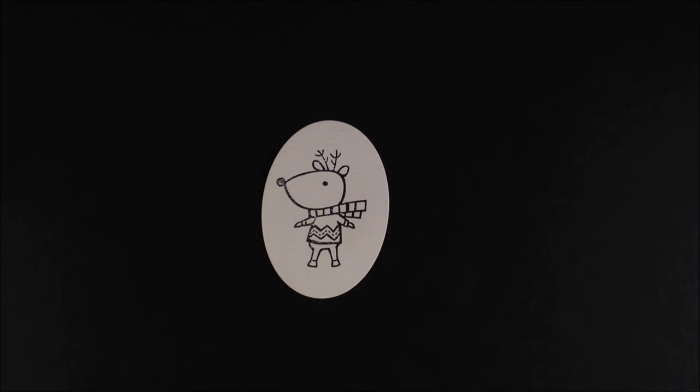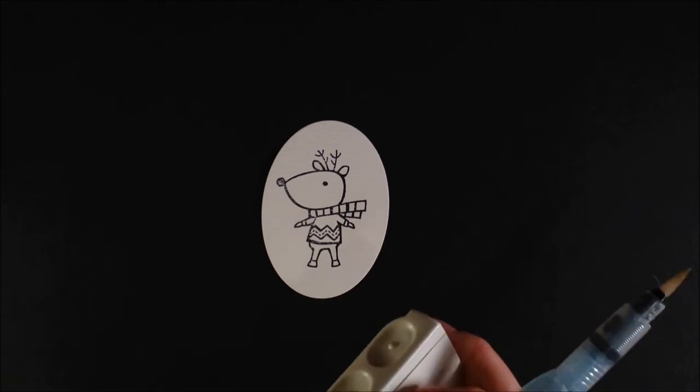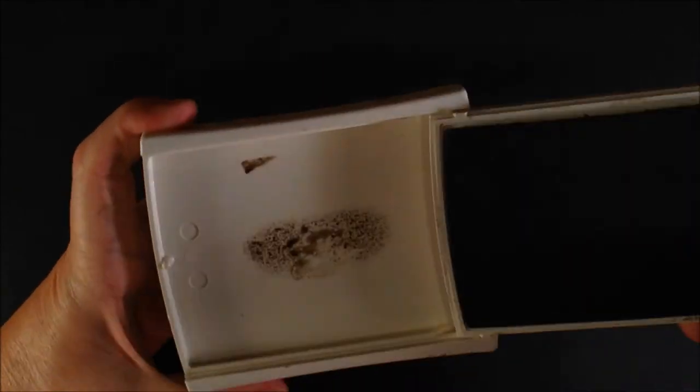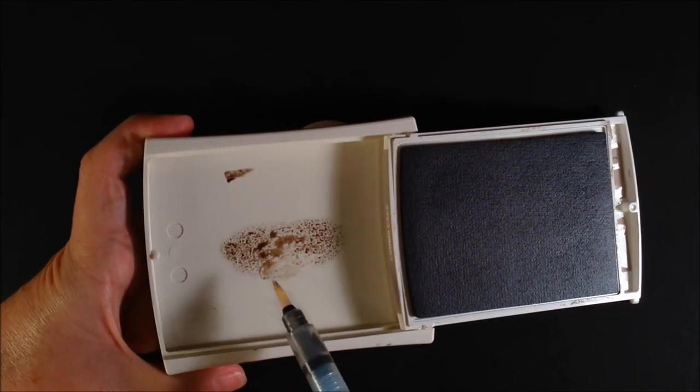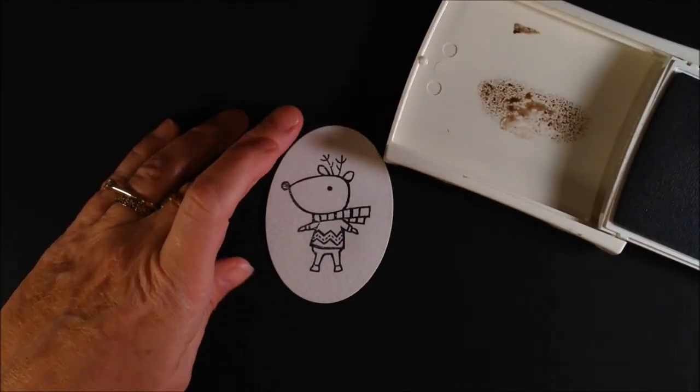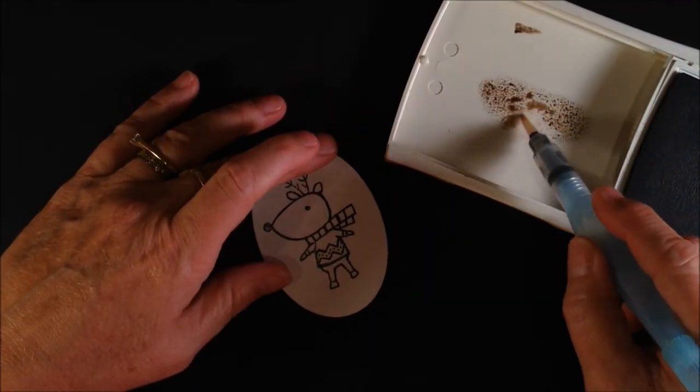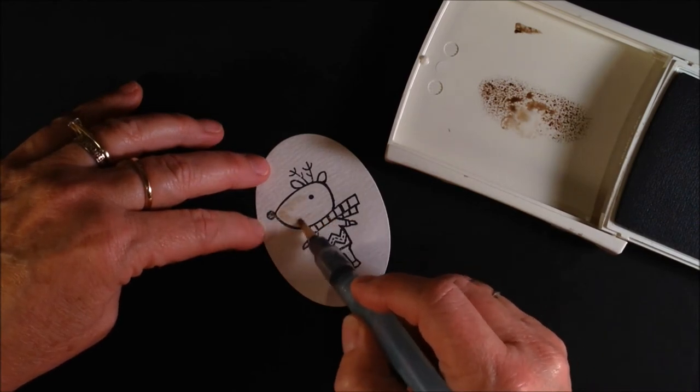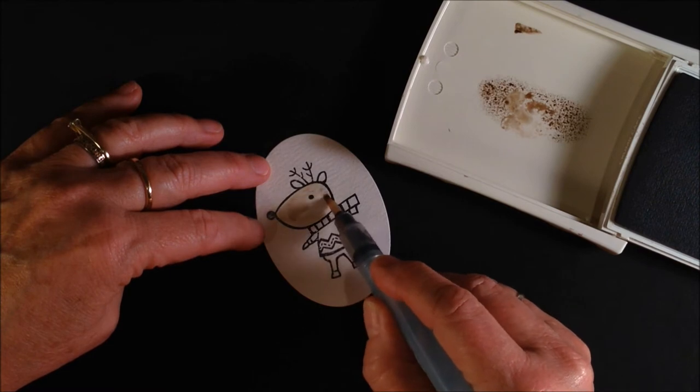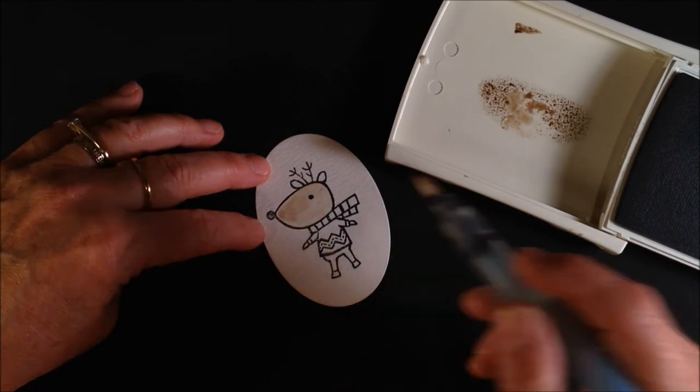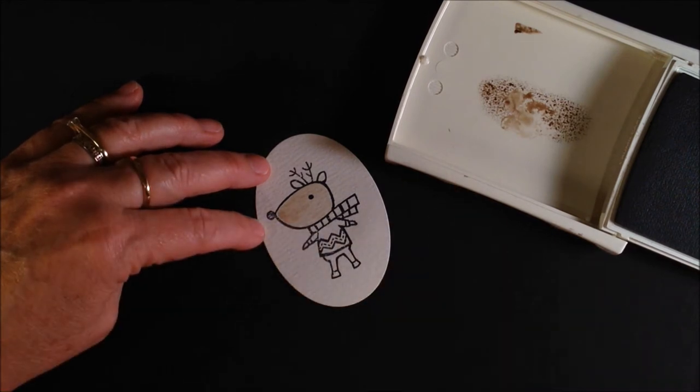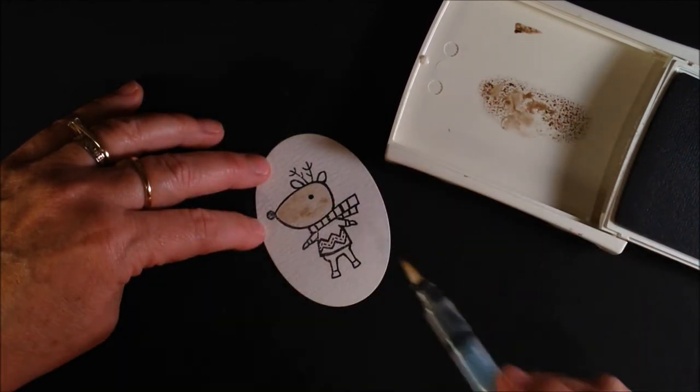You always start with the lightest color first. Now I'm going to squeeze my ink pad. Stampin' Up has designed their ink pad so that you can squeeze them and get this little pooling of ink there. And we want to create some shading. Now we're pretending that the light is coming from the left on this project. Most of the time I pretend the light is coming from the right, but since he's looking this way we're going to have him kind of like he's looking in the sun.